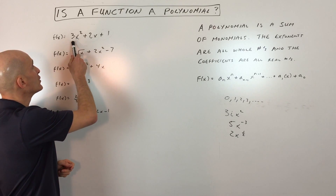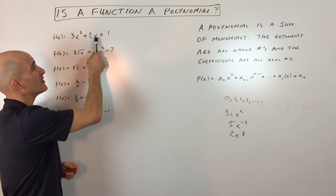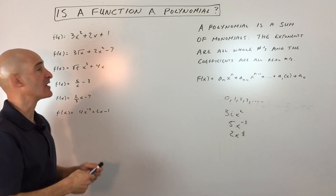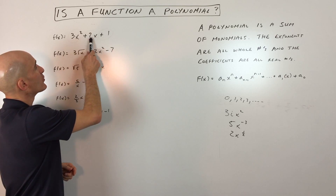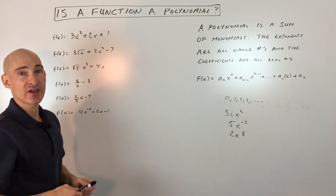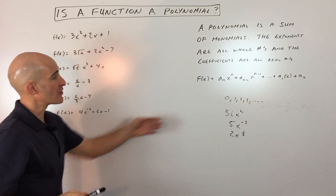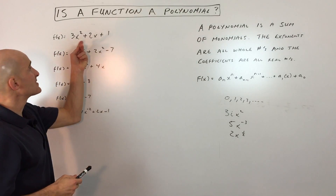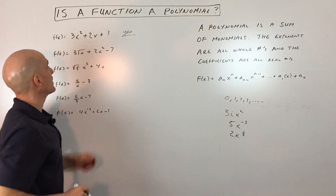Well, it's looking pretty good. You've got a sum of monomials. It doesn't have to be all addition — subtracting is just like adding a negative. The coefficients, the numbers in front of the variables, are all real numbers. You don't see any i's for imaginary. And when you look at the exponents, these are all whole numbers — 0 or the positive integers. So yes, this is a polynomial.